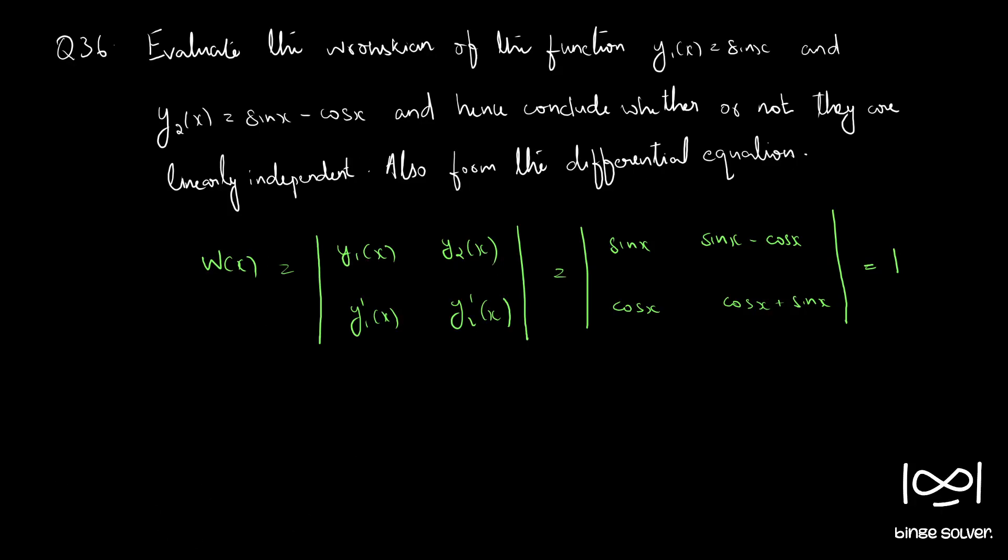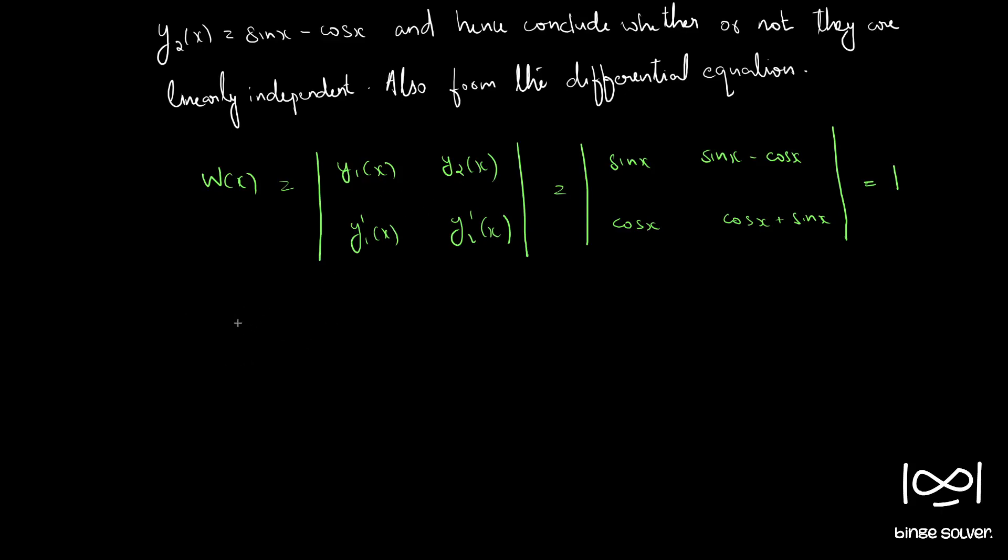Now we have to form the differential equation. That was not discussed in the previous question. Since these solutions are linearly independent, we can write y equal to a, where a and b are parameters, a sin x plus b times sin x minus cos x. So this is our equation 1. Now we can write y dash as a into cos x plus b into cos x plus sin x.